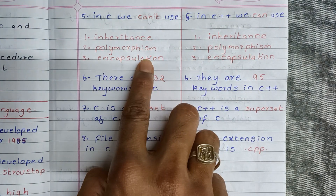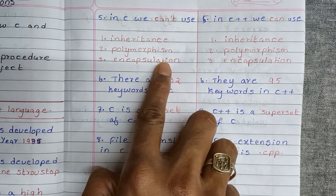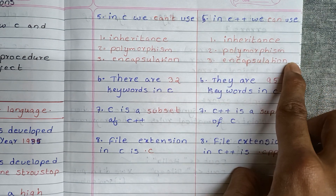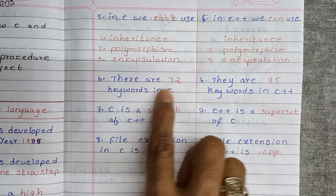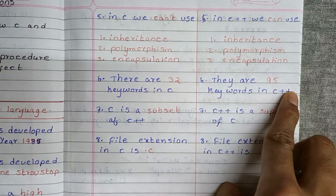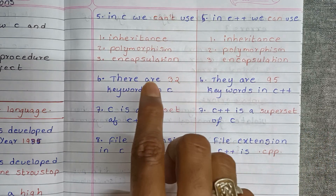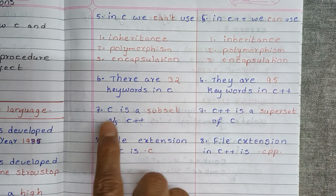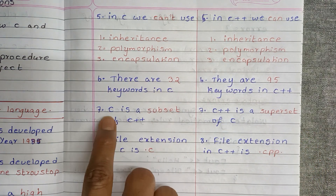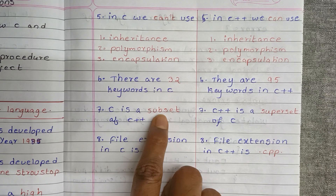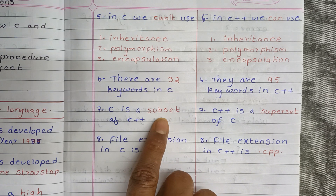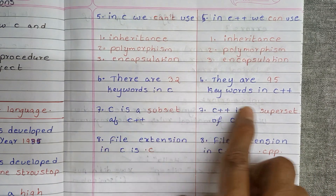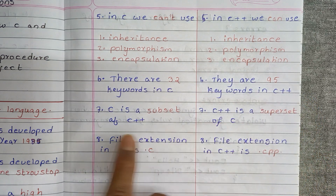In C we can't use concepts like inheritance, polymorphism, and encapsulation, but in C++ language we can use these concepts. There are 32 keywords in C language but there are 95 keywords in C++ language. Also, C is a subset of C++ and C++ is a superset of C.